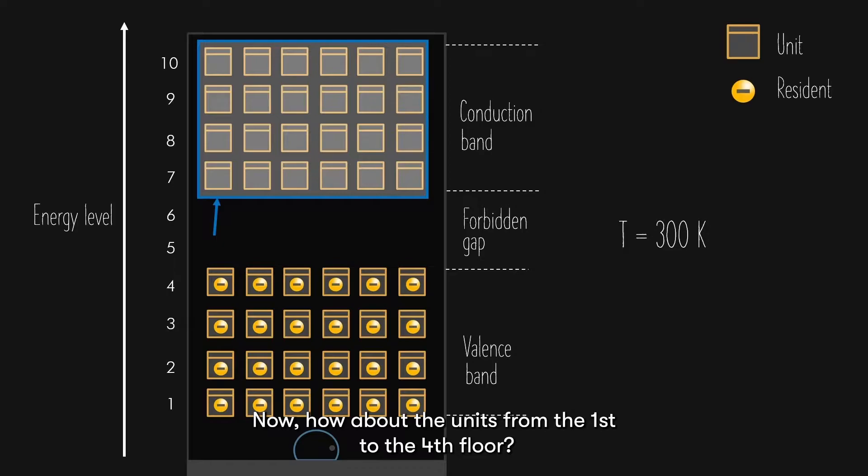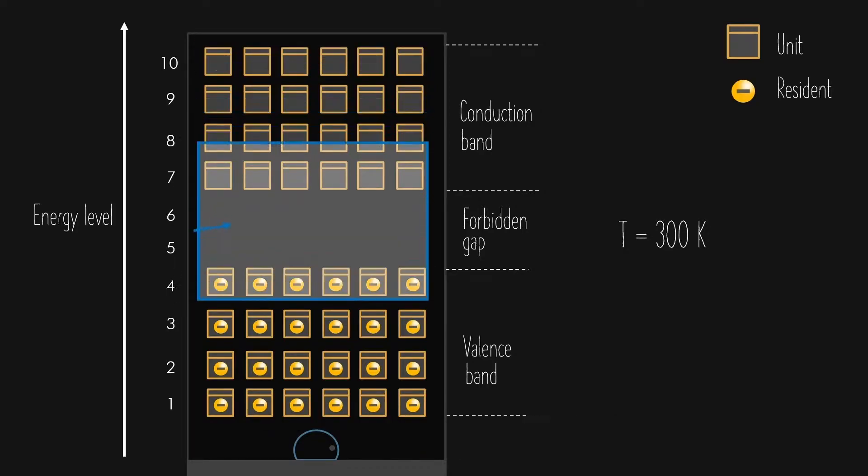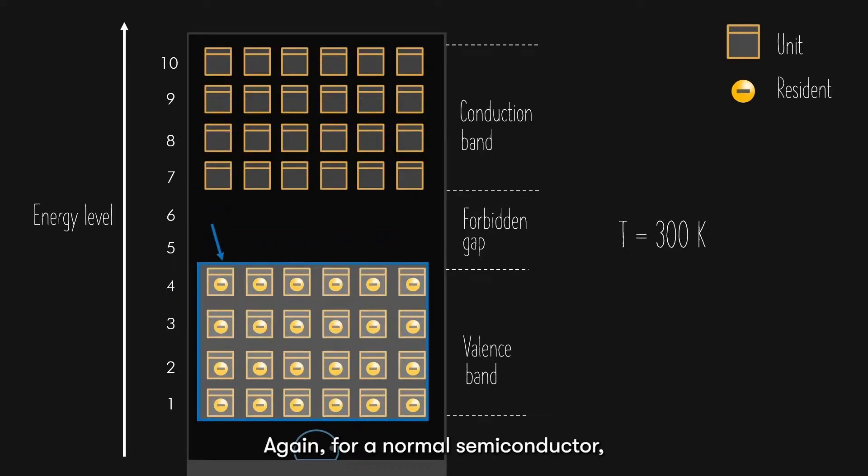Now, how about the units from the 1st to the 4th floor? Again, for a normal semiconductor, since no electrons are excited, all units are fully occupied. And hence, the probability of an electron occupying the units from the 1st to the 4th floor is 1.